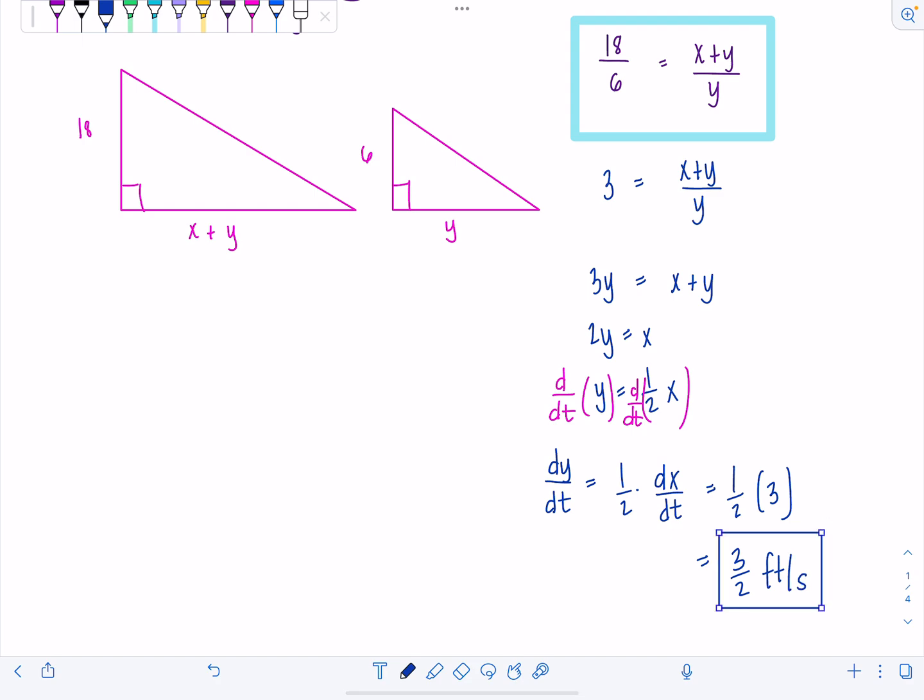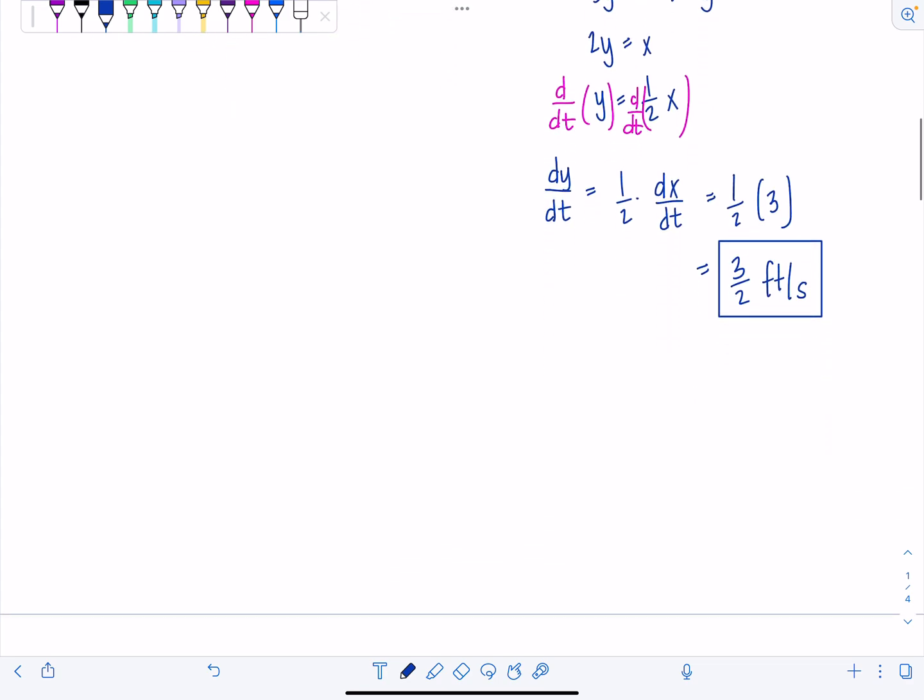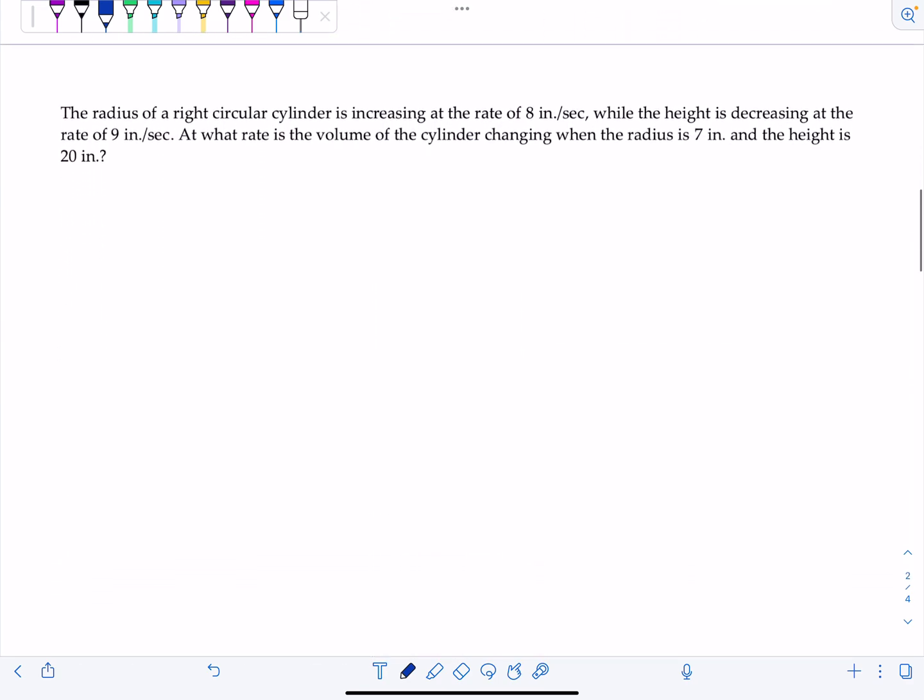Now we differentiate both sides with respect to time. Derivative of Y with respect to T is dy/dt. Derivative of one half X is one half dx/dt. They gave us dx/dt as three feet per second, so our final answer is three halves feet per second. You might be thinking, wait, we didn't even use the 40. The rate of change of his shadow is not impacted by the distance away from the lamppost, but rather the speed at which he's walking is controlling it. Hopefully that was a good warm up.